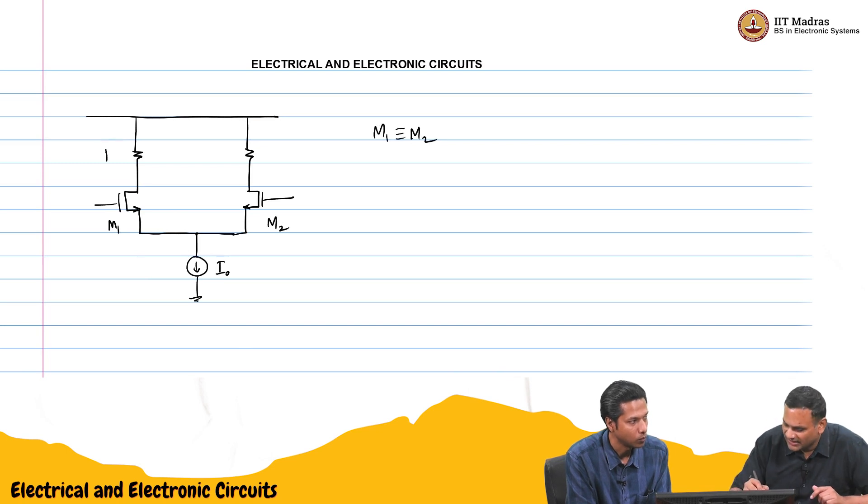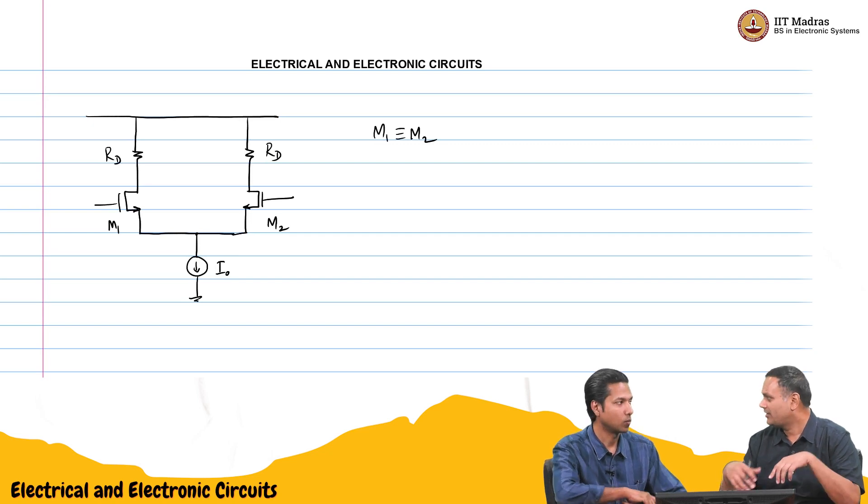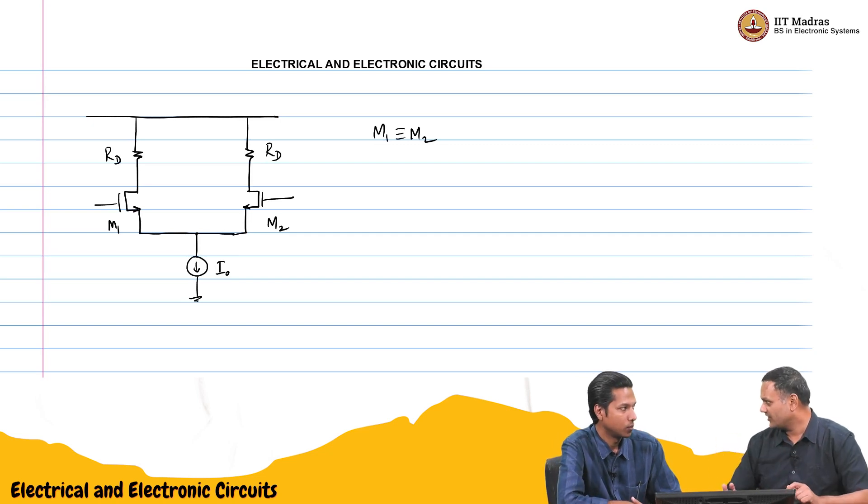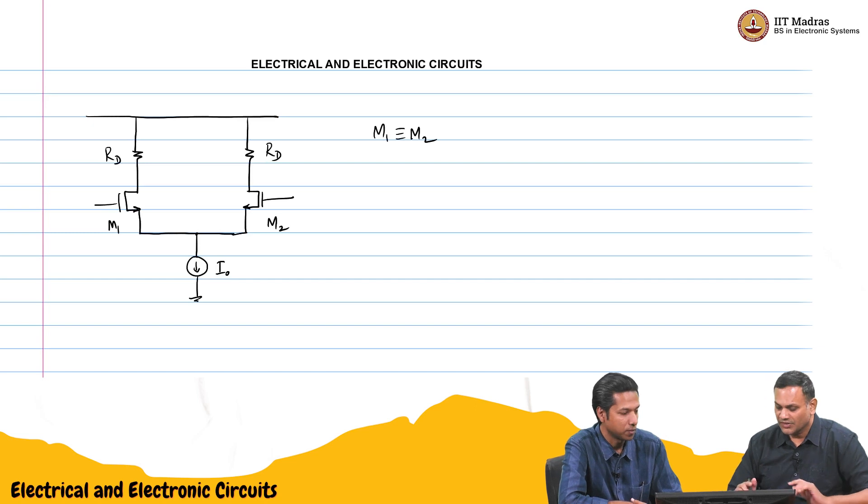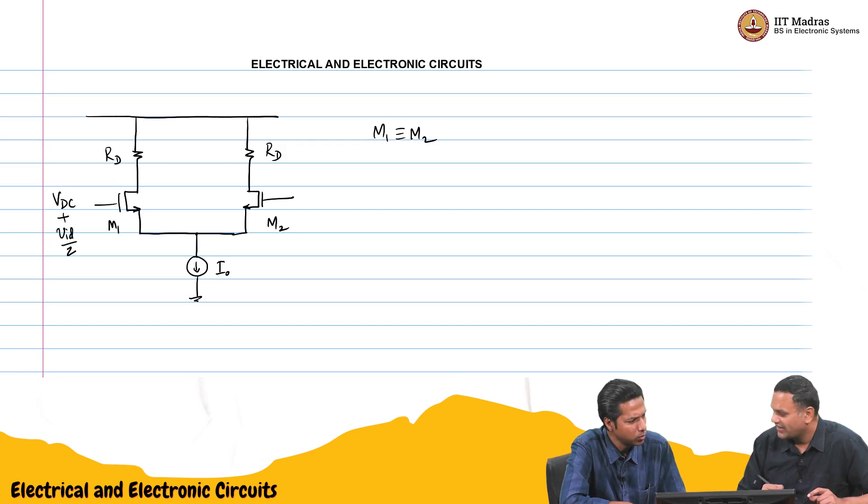Resistors are the same, I will call them RD, you have to use the same resistors. We apply same DC voltage. But different opposite AC voltage. Difference voltage. So, shall I just show that directly? So, I will say that you have VDC plus VD by 2. VD by 2.